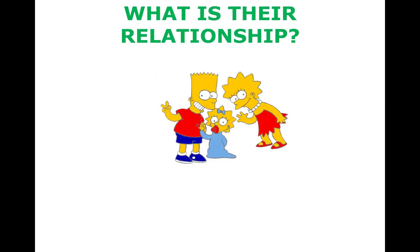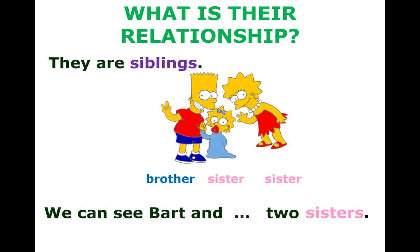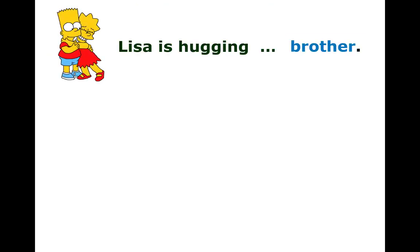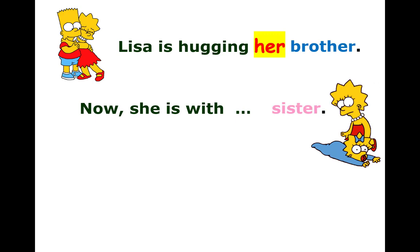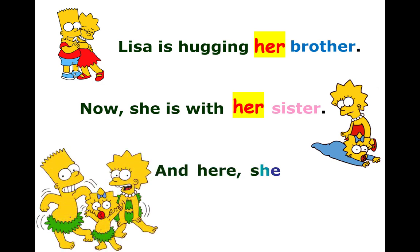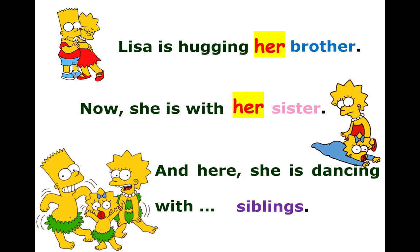What is their relationship? Remember, they are siblings. We can see Bart and his two sisters. Here, Lisa is hugging her brother. Now she is with her sister. And here she's dancing with her siblings.